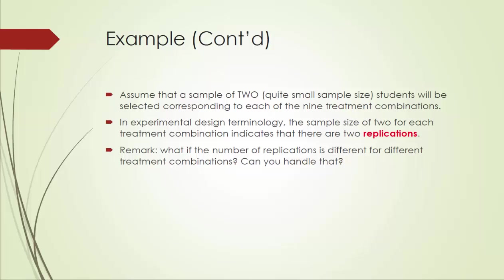In experimental design terminology, the sample size of two for each treatment combination indicates that there are two replications. In practice, there's no guarantee that the number of replications will be the same for different treatment combinations. But with the same replications across different treatment combinations, the calculation will be much easier.